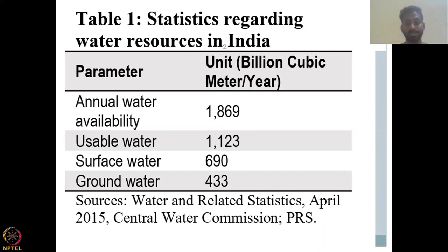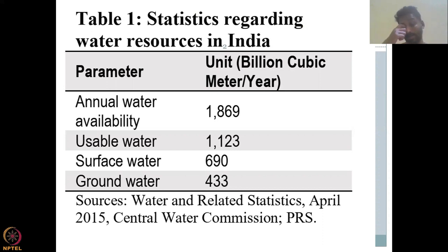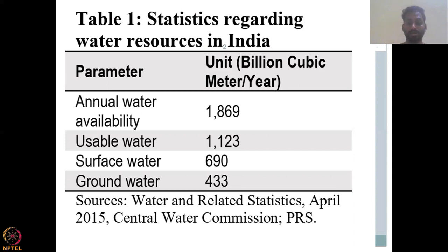Let's look at the statistics as per the Central Water Commission, CWC. The annual water availability is around 1,869 billion cubic meters per year, of which usable water is lesser at 1,123 billion cubic meters per year. The surface water contribution to that total is 690, whereas groundwater is 433 billion cubic meters per year. So, groundwater is almost very near to the surface water, and it cannot be neglected.